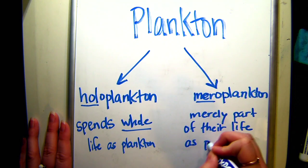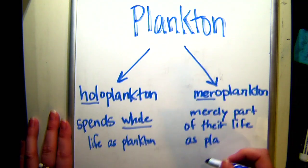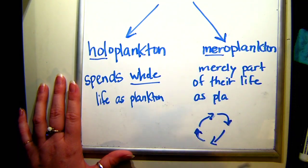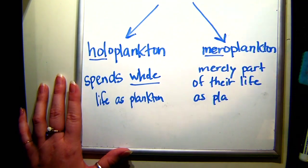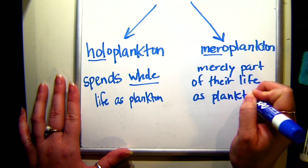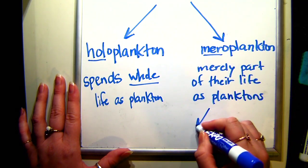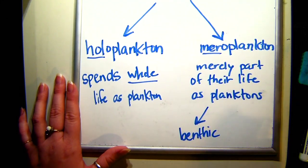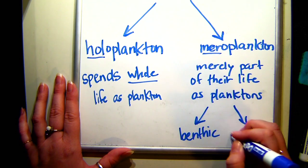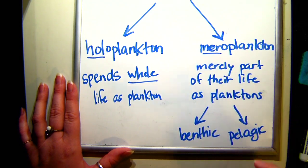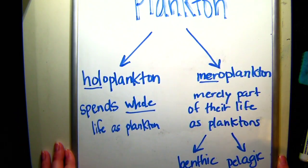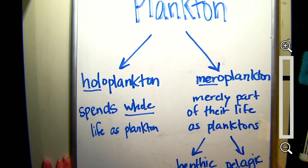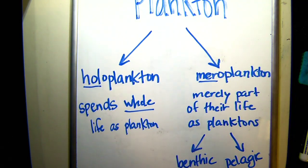Meroplankton means that at some point within the animal's life cycle — going from one stage to another — they are plankton, but then they settle into different kinds of animals. They can settle into a benthic organism, which is an animal that lives on the bottom, or they can become pelagic, which is an animal that swims within the water column. Plankton is broken down into these two groups.